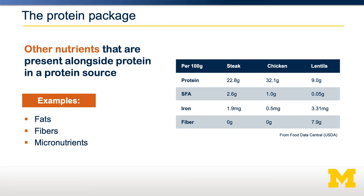Shown here on the right are three examples. You can see that per 100 gram serving, steak has 22.8 grams of protein, but it also has 2.6 grams of saturated fat and 1.9 milligrams of iron. On the other hand, lentils contain quite a bit less protein — 9 grams — but also contain 7.9 grams of fiber, almost half of the recommended daily intake for a woman.